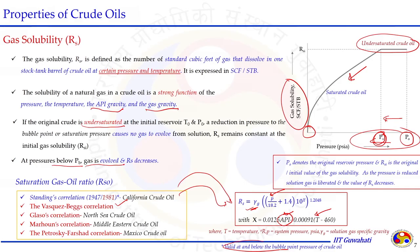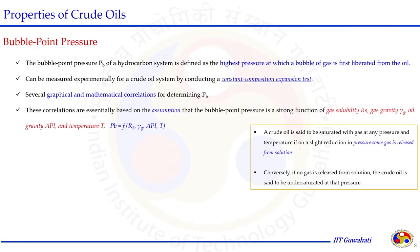The Standing correlation for gas solubility, though developed for California crude oil, is valid at and below bubble point pressure for any crude oil. Above bubble point pressure, the system is single-phase and mild pressure changes do not release gas. Bubble point pressure is defined as the highest pressure at which bubbles of gas are first liberated from oil. It can be measured experimentally by conducting a constant composition expansion test.